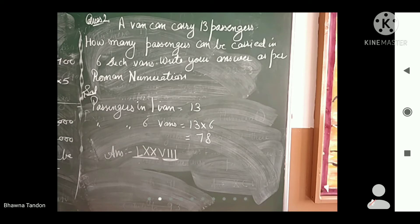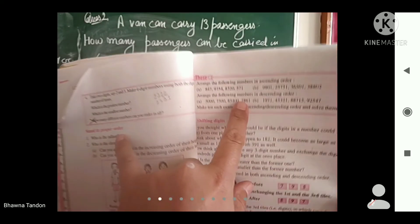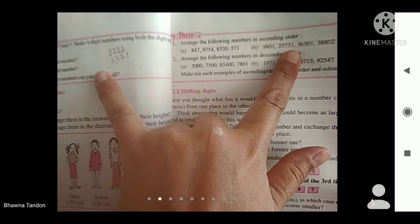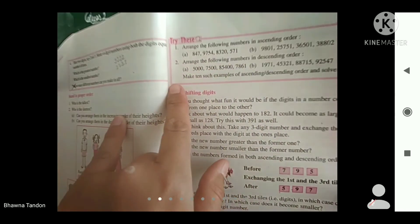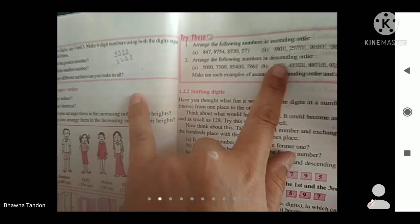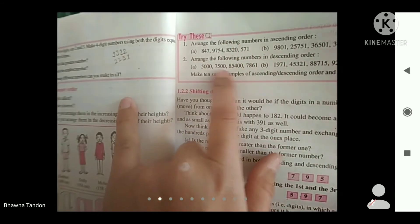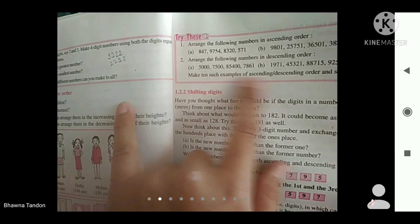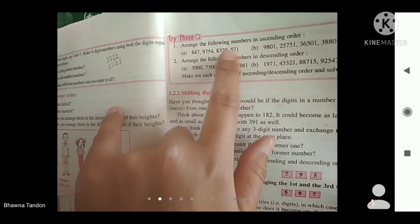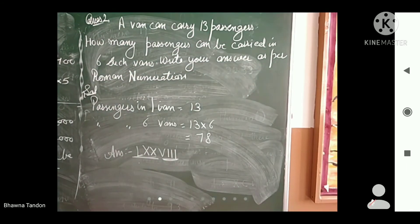You will copy the questions. The space is not given in the book, so you will arrange these numbers in ascending and descending order in your notebook. Make such examples — we will do just simple questions. We will do two questions in ascending and descending order and make 10 such examples.